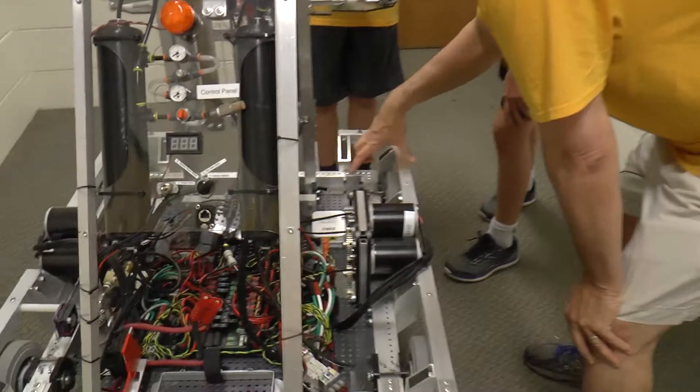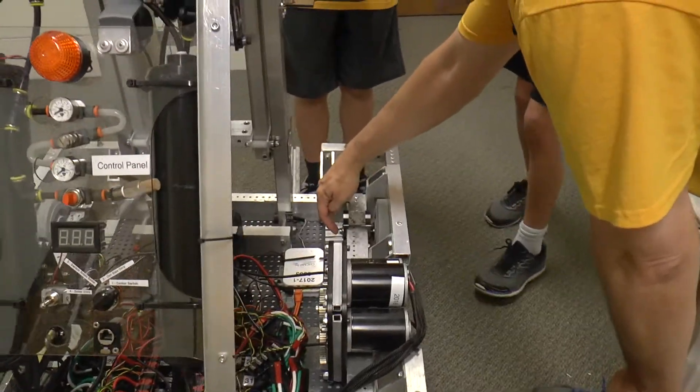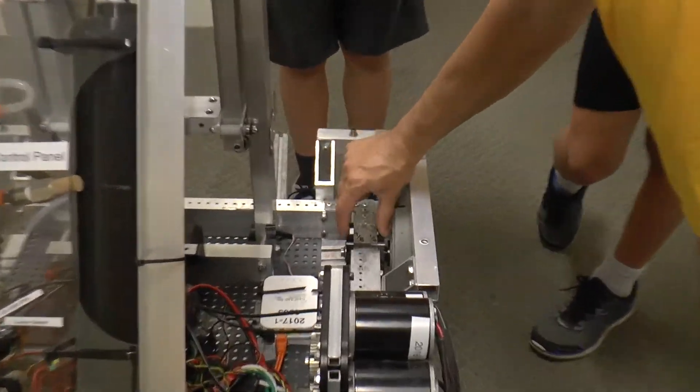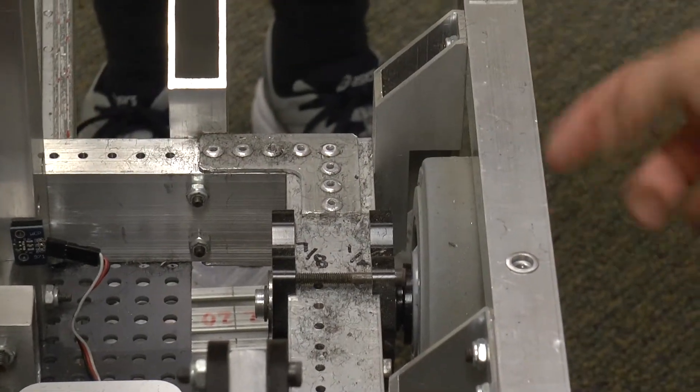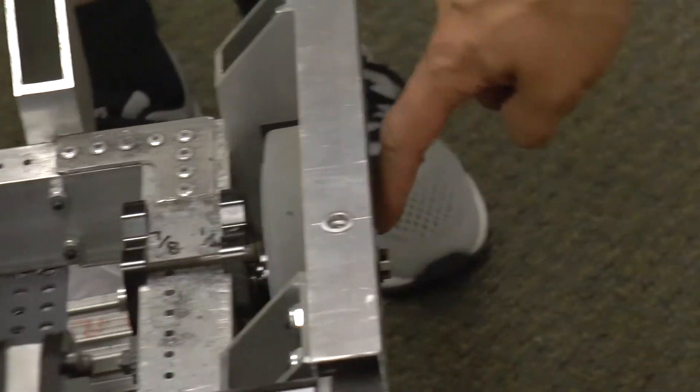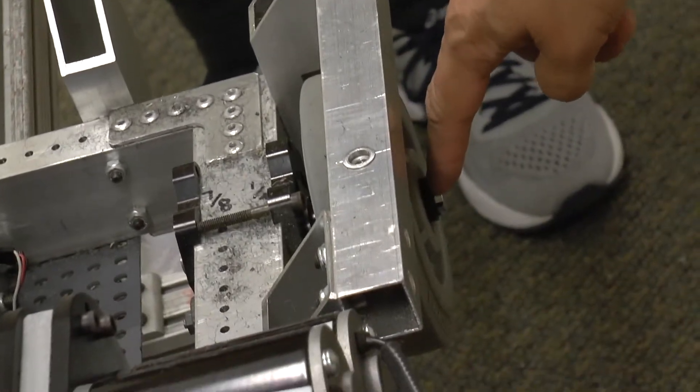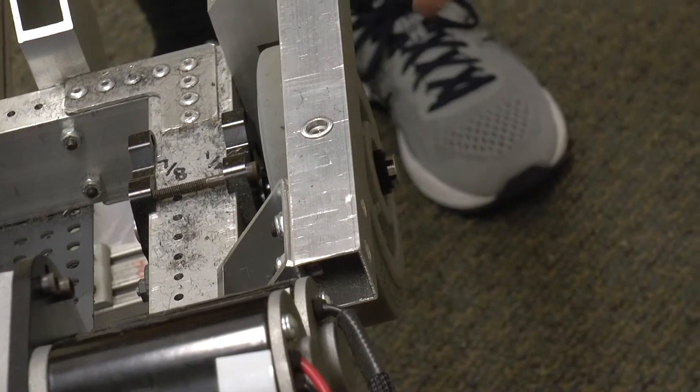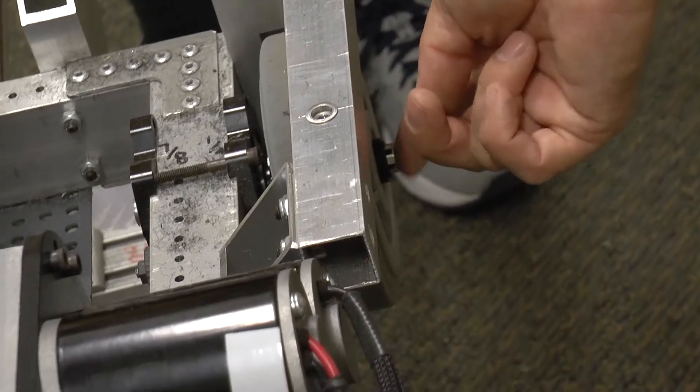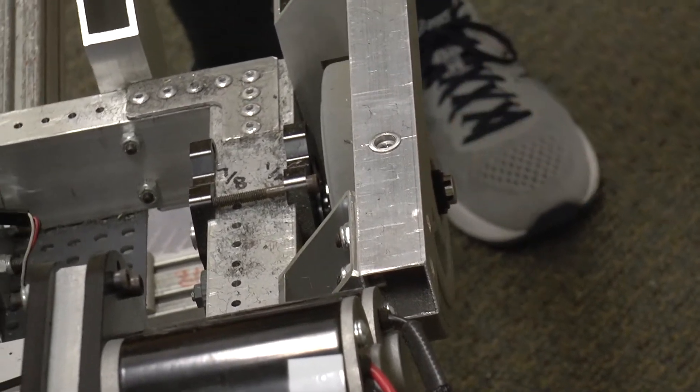And then we'll mount the axle on the robot in bearings in these plates. And then we'll put the wheel on and we'll use a scribe to scratch on the outside where the other snap ring groove is going to be. And then we'll cut that snap ring groove and then trim off the extra off of the end of the shaft.